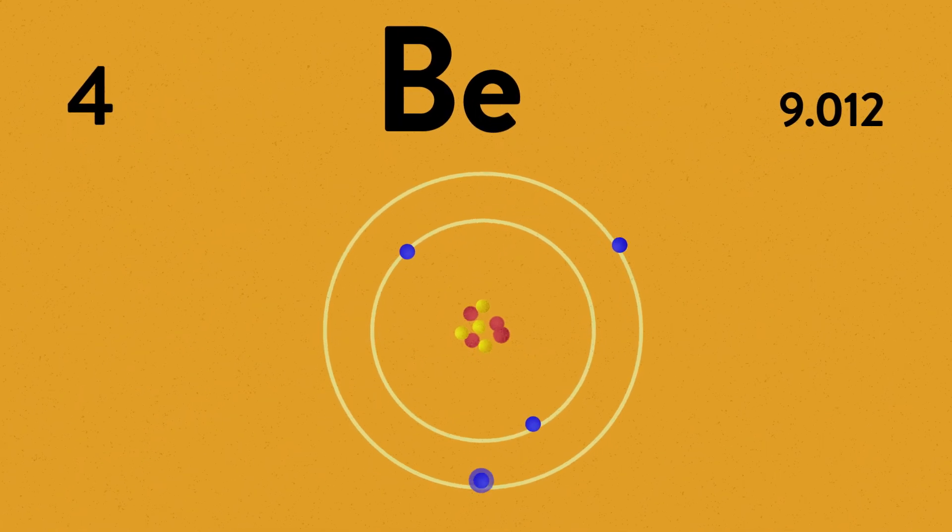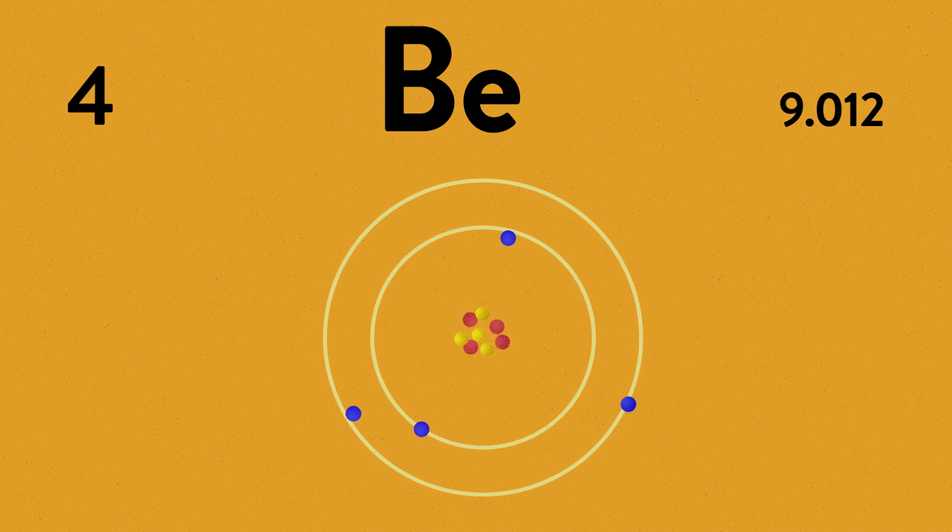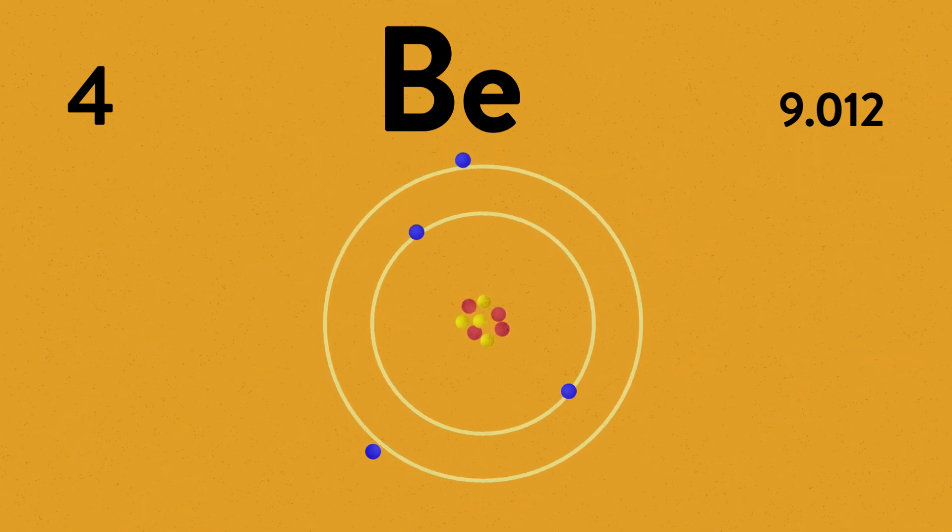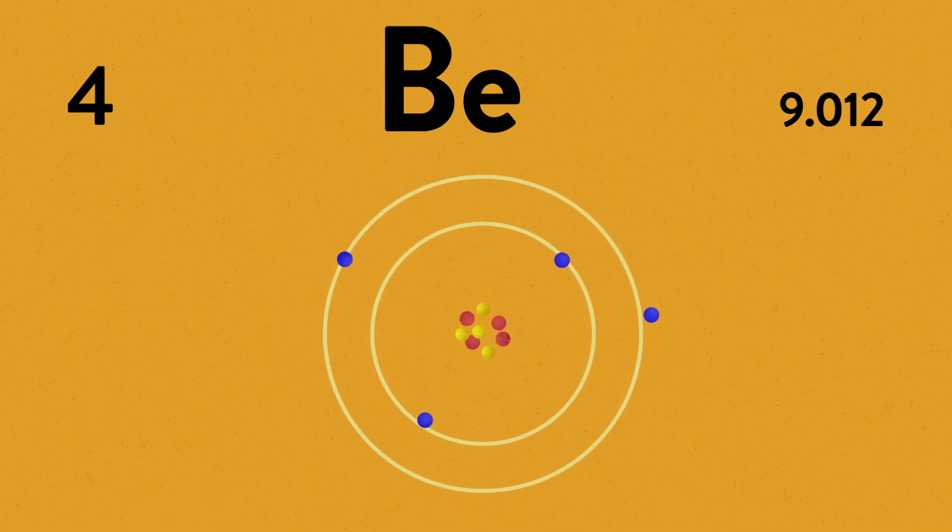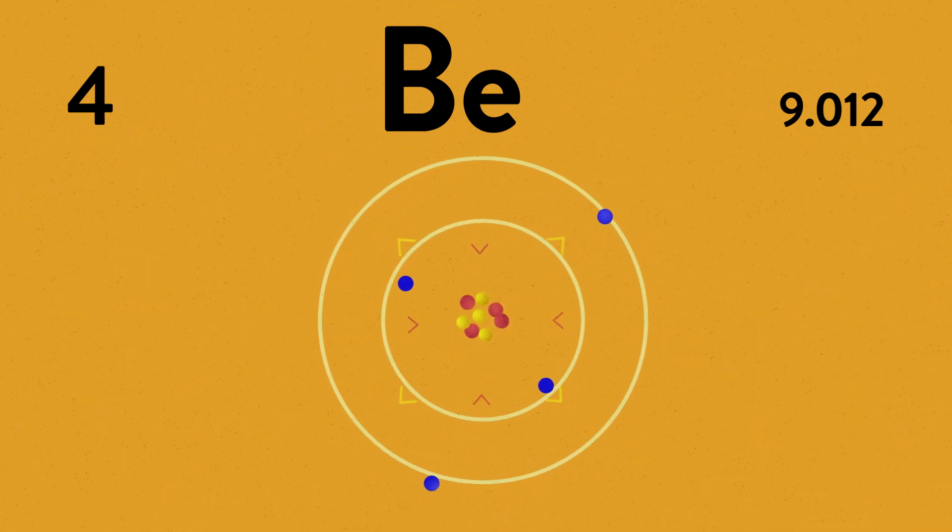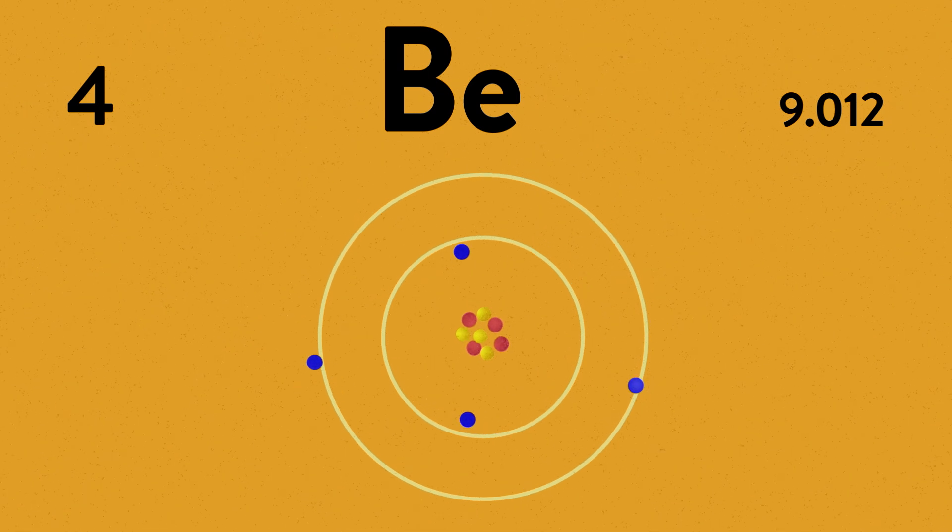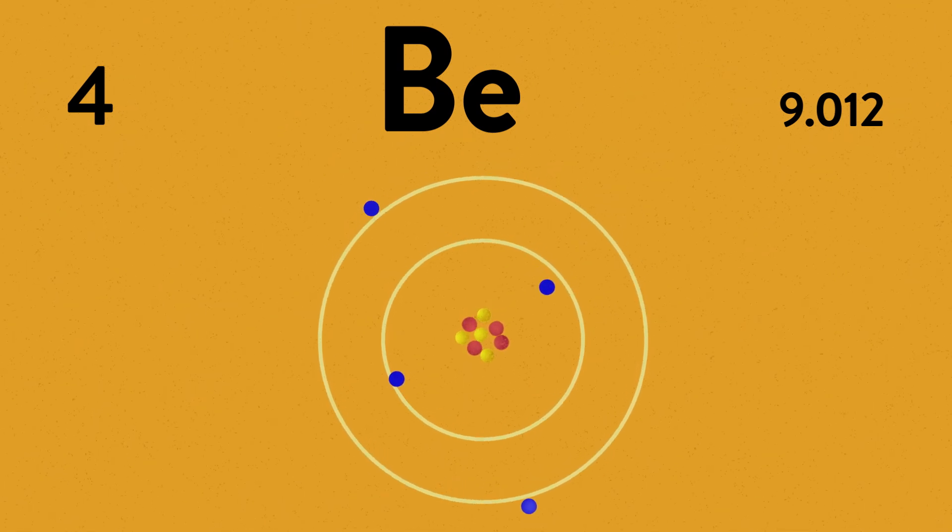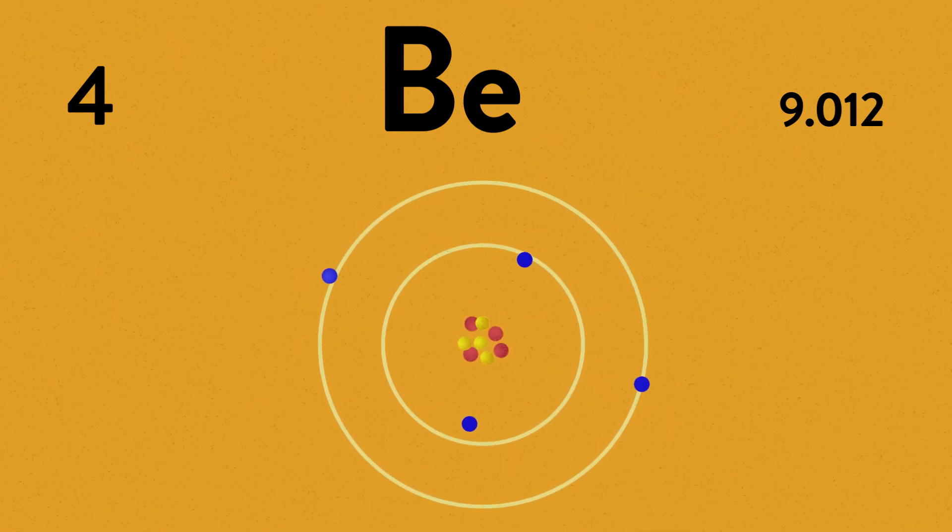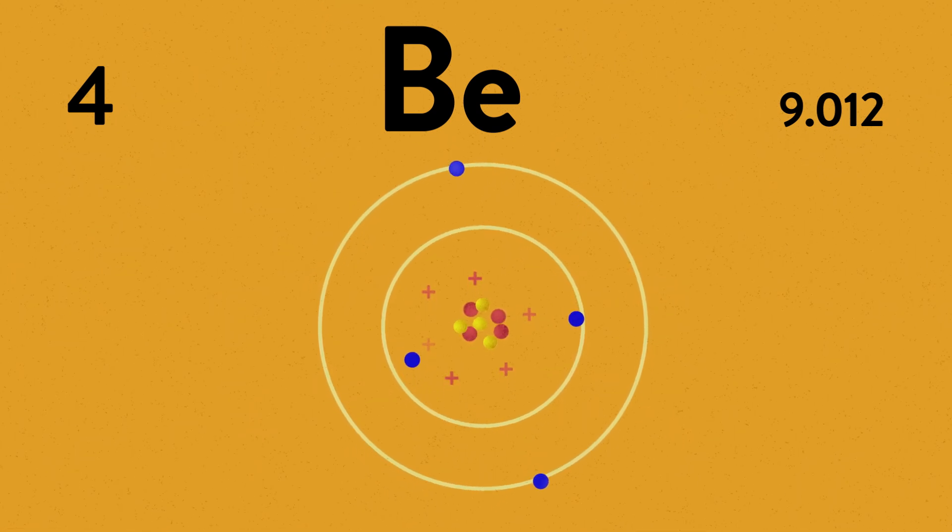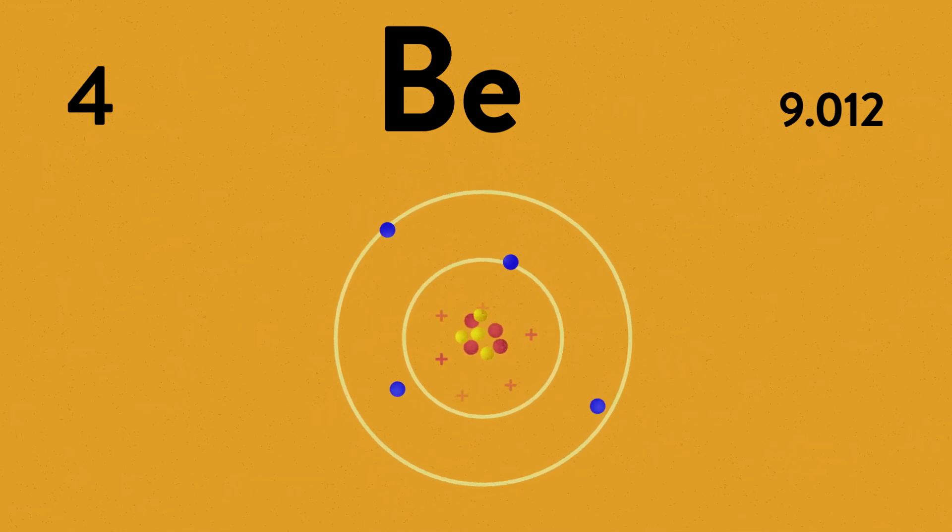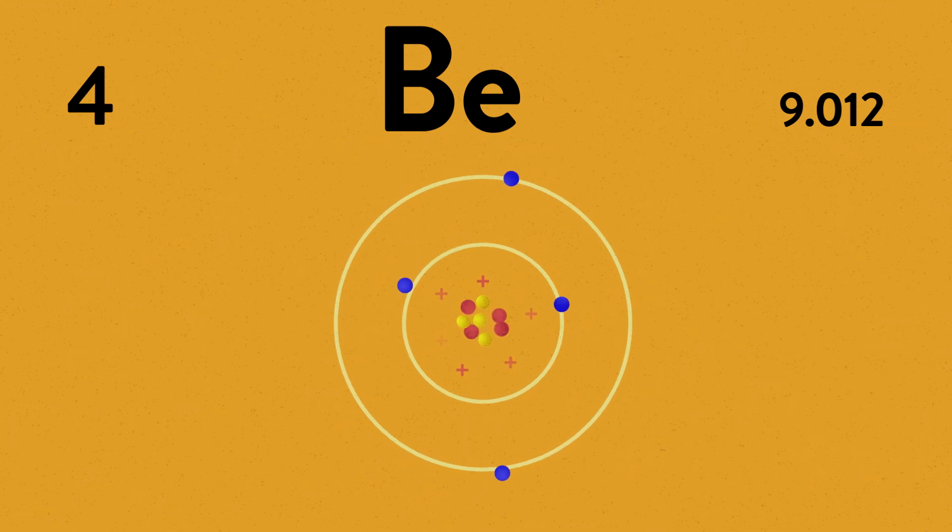It's important to note that outer shell electrons do not shield the other electrons. That means that beryllium has the same number of electrons shielding as lithium does. However, beryllium does have a higher effective nuclear charge because of that additional proton. This increased positive charge in the nucleus causes electrons to be pulled in more strongly, resulting in a smaller atomic radius.